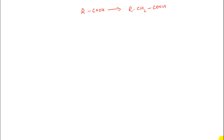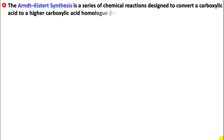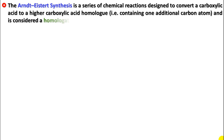This series of reactions is able to convert the carboxylic acid into the higher homolog of the acid. The Arndt-Eistert synthesis is a series of chemical reactions designed to convert a carboxylic acid to a higher carboxylic acid homolog containing one additional carbon atom, and we call it the homologation process.